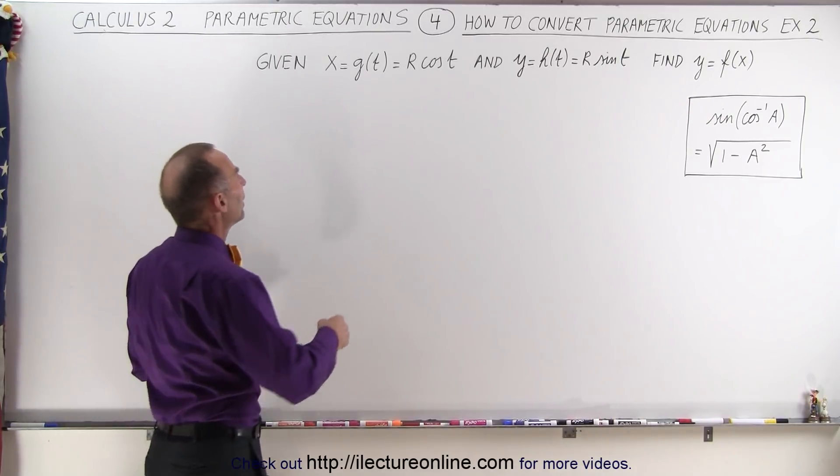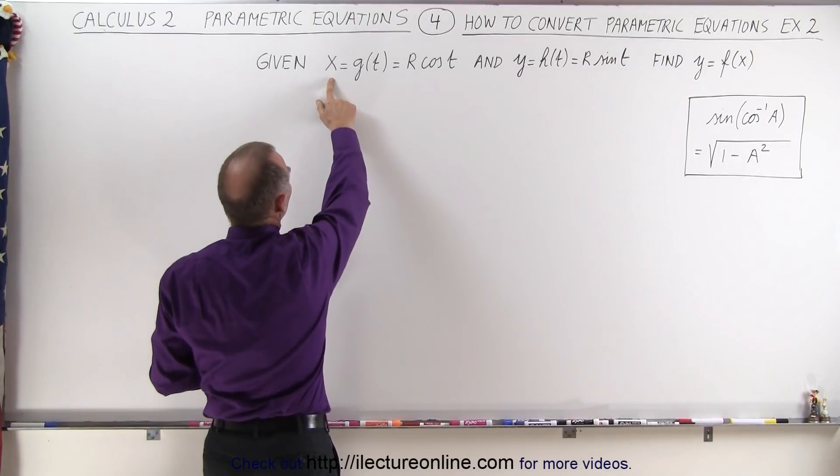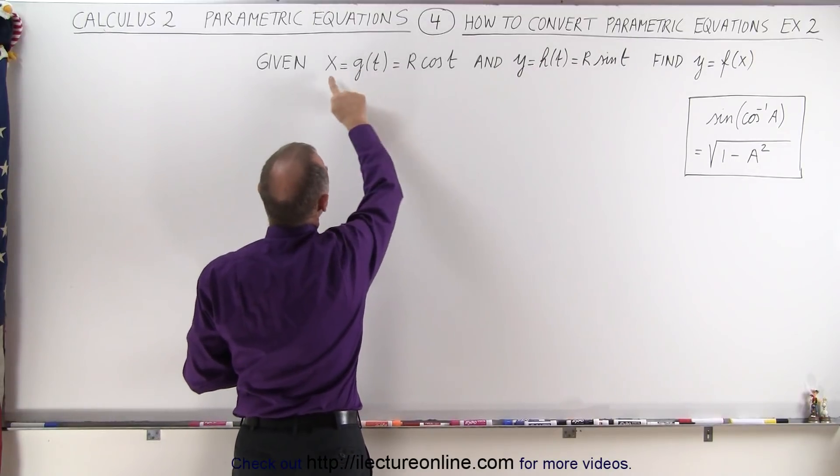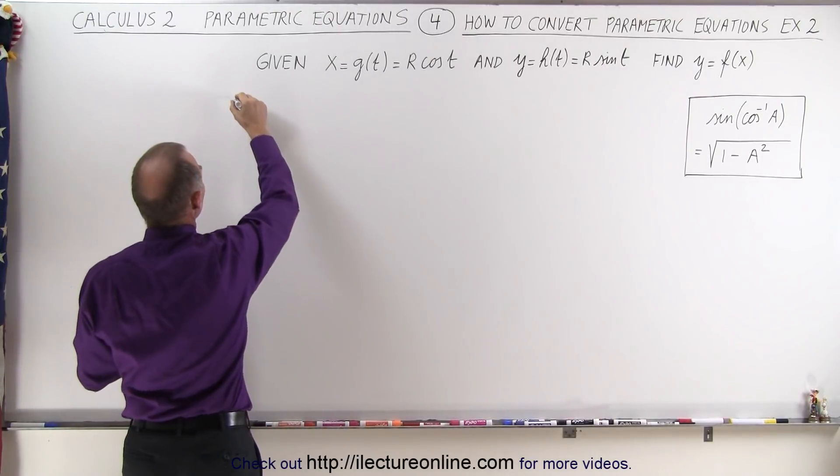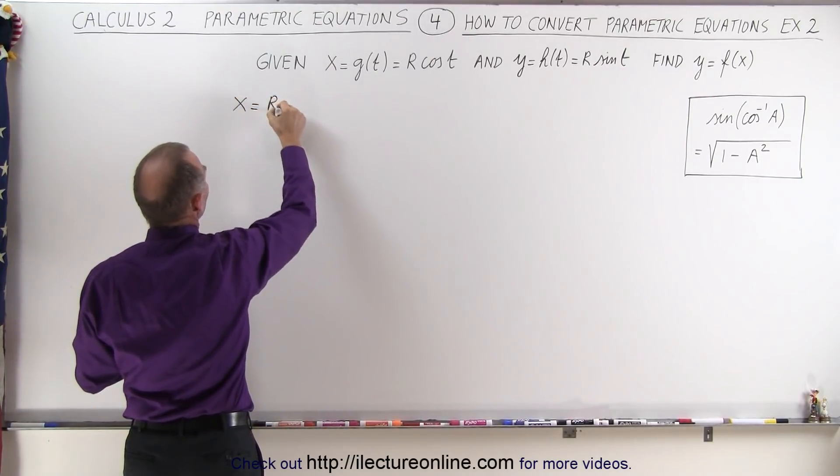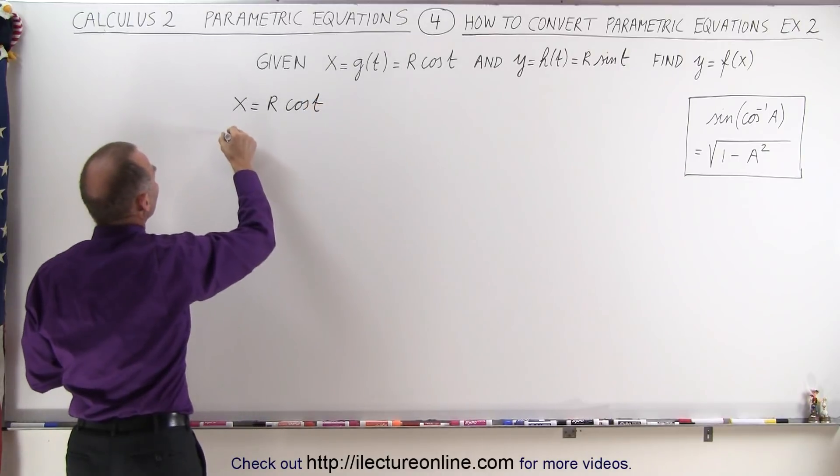Well, what you could do is go ahead and solve for t in terms of x using this equation right here. So the first thing we're going to do is say x equals r times the cosine of t, which means